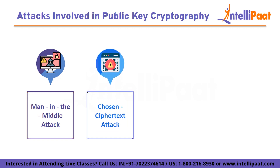The chosen ciphertext attack: think of an attacker as someone who can tamper with a lockbox and observe how it reacts when unlocked. In a chosen ciphertext attack, an attacker sends an encrypted message to the system and observes how it responds. This can provide insights into the encryption process and potentially reveal the private key. Secure encryption schemes involve padding and other mechanisms to make it difficult for attackers to gain useful information from such interactions.